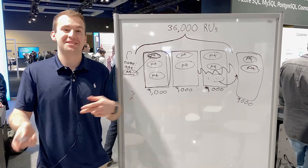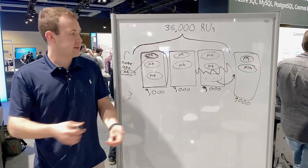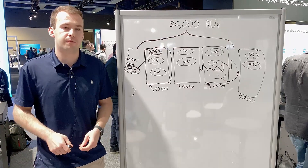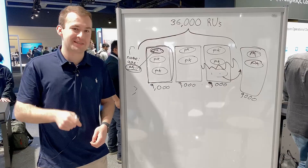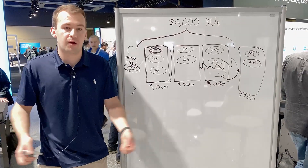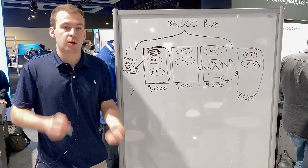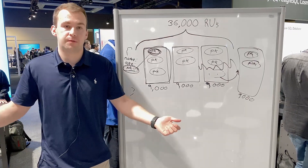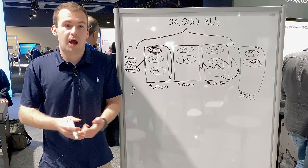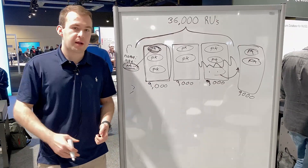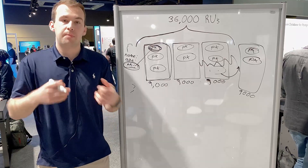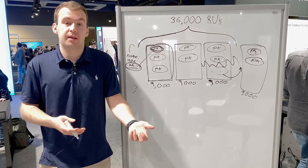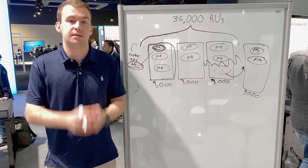Now let's talk about best practices for picking your partition key. The first property is cardinality. Each partition key can only grow to 10 GB and 10,000 RUs, so if the partition key has high cardinality — many possible values — there's essentially no limit to how much you can scale out in Azure Cosmos DB. Best practice in almost every case: when you create a container and pick your partition key, it must have really, really high cardinality, because this is essentially your only scaling bottleneck in Cosmos DB. You can create as many partition keys and partitions as you'd like.